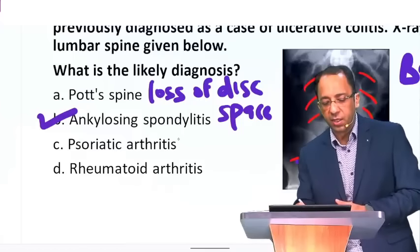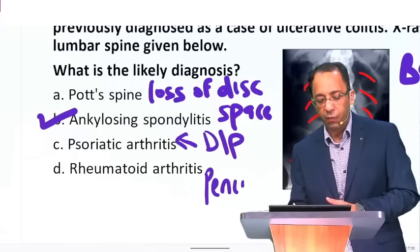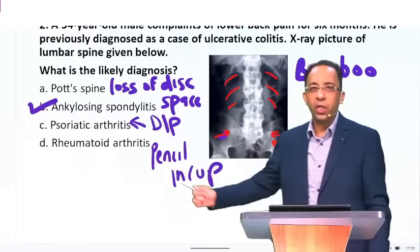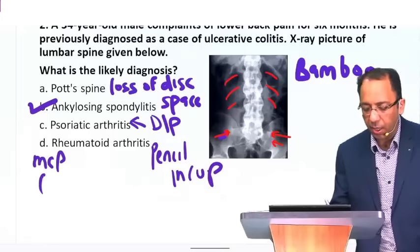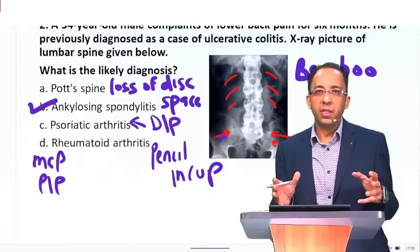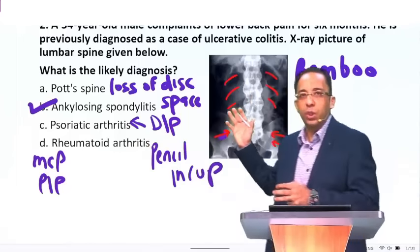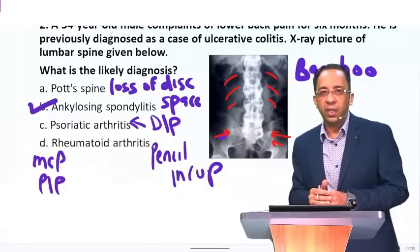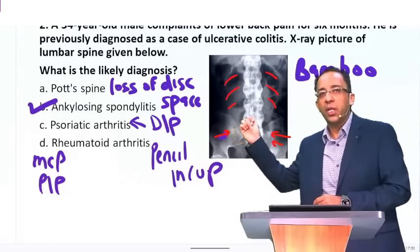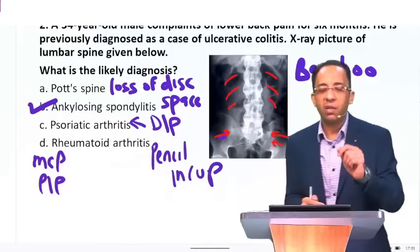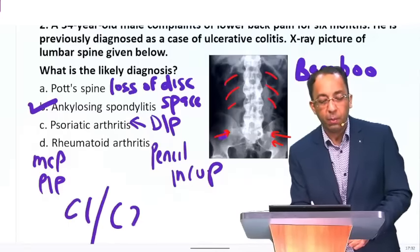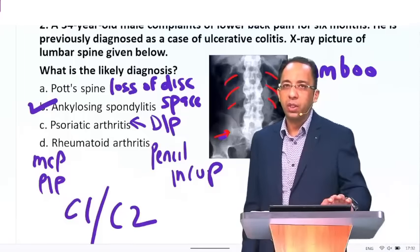In psoriatic arthritis you see distal interphalangeal joint involvement with pencil-in-cup appearance. In rheumatoid arthritis the joints involved are MCP and PIP — metacarpophalangeal and proximal interphalangeal joints. The rule of thumb: there are two kinds of arthritis — seropositive (rheumatoid arthritis) and seronegative (ankylosing spondylitis). In seronegative arthritis the involvement is in the axial skeleton; in seropositive, the appendicular skeleton. But if asked which part of the spine can be involved in RA, the answer is C1-C2 — the atlantoaxial joint. Many people get this wrong in the exam.